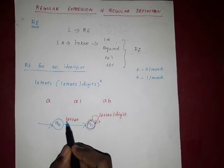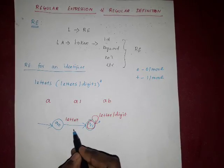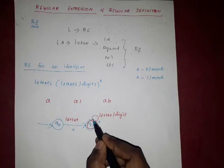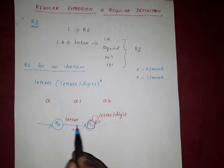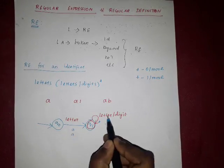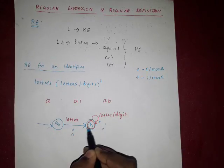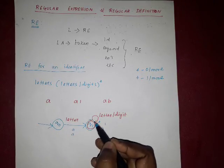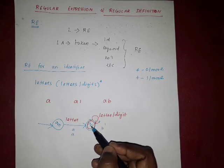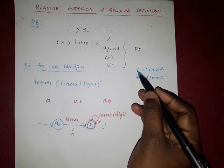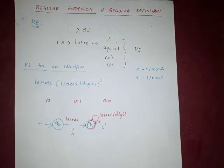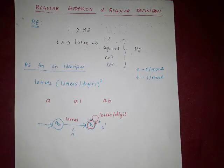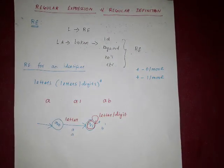In case 'a1' is an identifier, letter 'a' goes to q1, then digit '1' loops back via the self-loop. In case 'ab', letter 'a' goes to q1, then letter 'b' uses the self-loop. This self-loop represents star — 0 or more times. Now we will see what is regular definition.